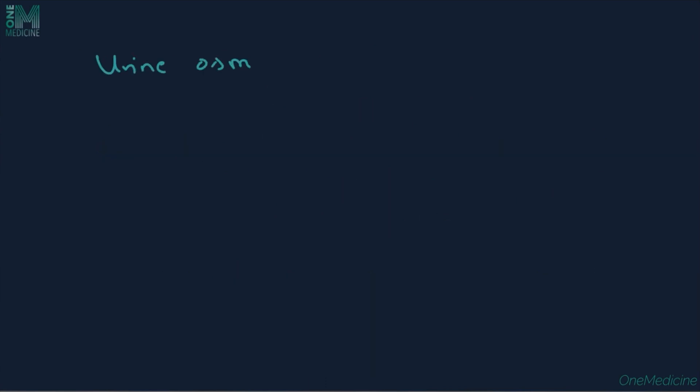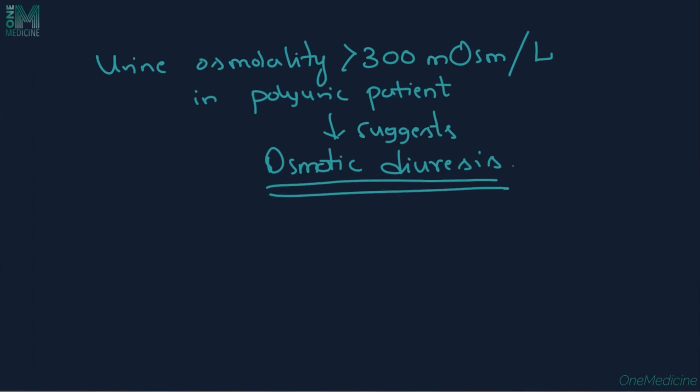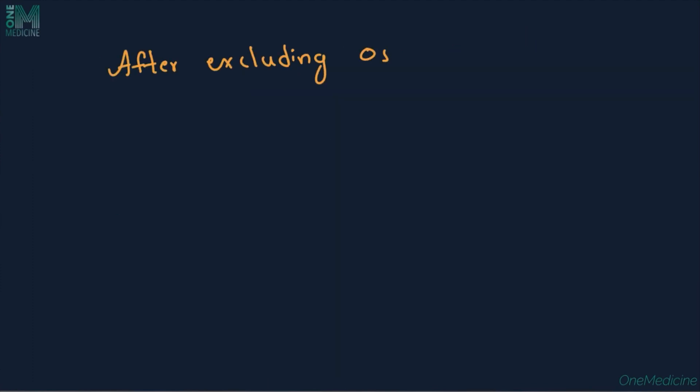Urine osmolality greater than 300 milliosmol per litre in the polyuric patient is suggestive of solute or osmotic diuresis where urine solutes are higher. After excluding the presence of osmotic diuresis, the causes of water diuresis must be explored.